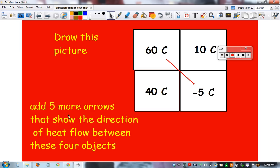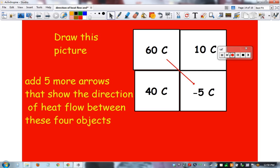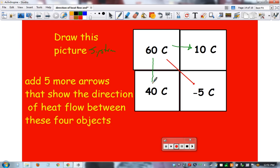So the next assignment was to draw this picture. And it's not even a picture. This is a system. Draw this four object system. Add five more arrows to show the direction of the heat flow between the four objects. So here's your answer. Always goes from hot to cooler.